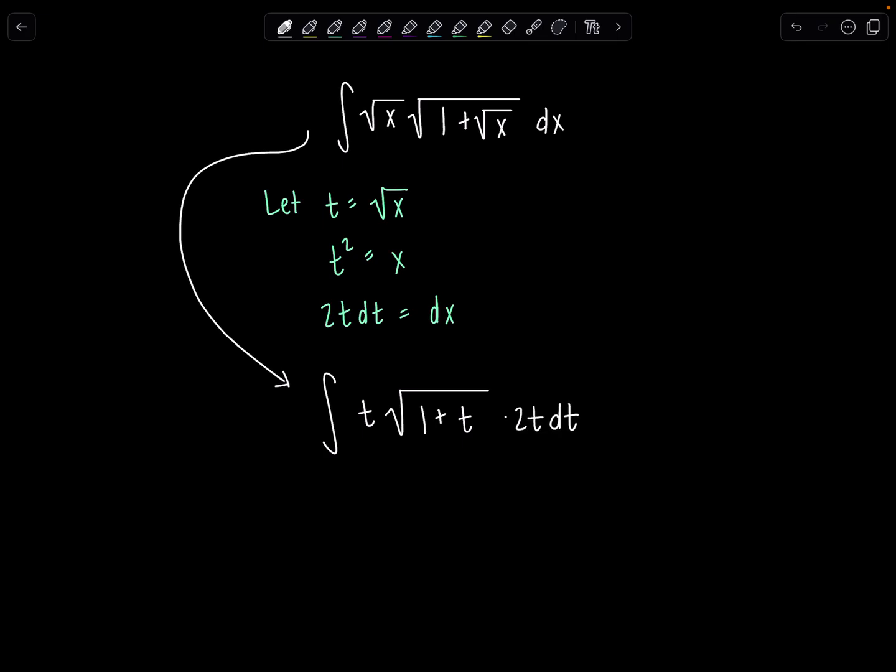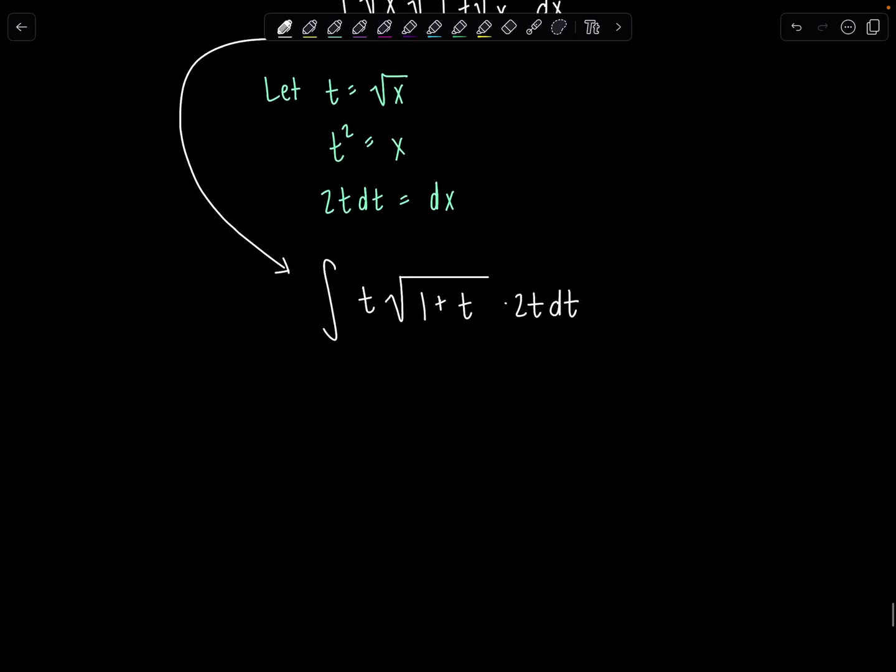dt and then dx is now 2t dt. So now let's clean things up. This is integral 2t squared times the square root of 1 plus t dt. And then I saw this would be a nice time to do not only integration by parts but tabular integration by parts, because the derivative of 2t squared will eventually be 0 after just a few iterations, and this I can easily keep anti-differentiating.